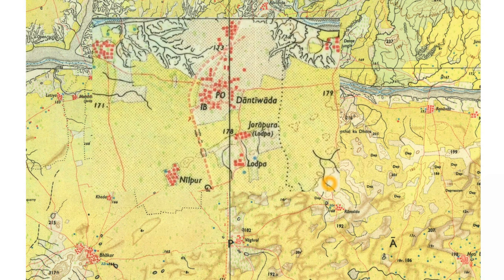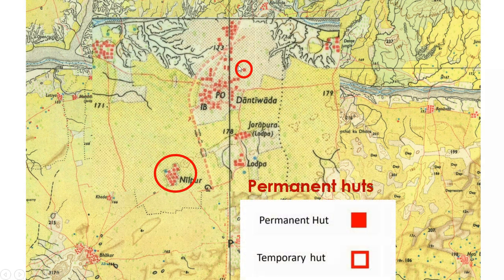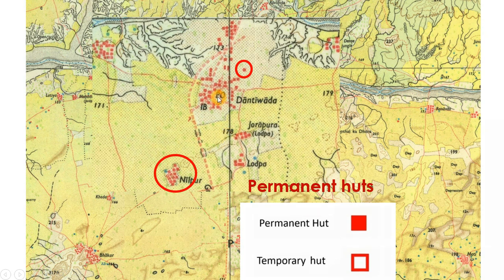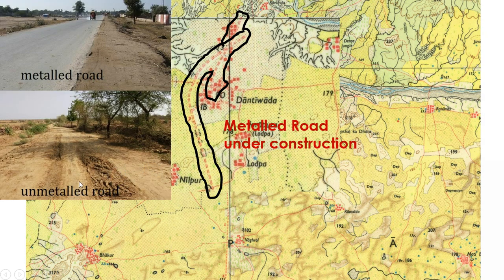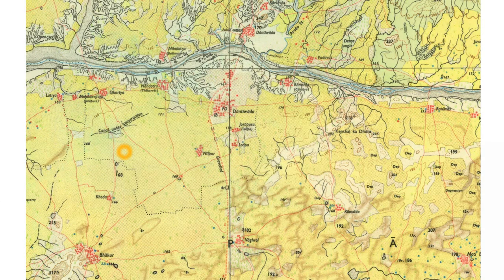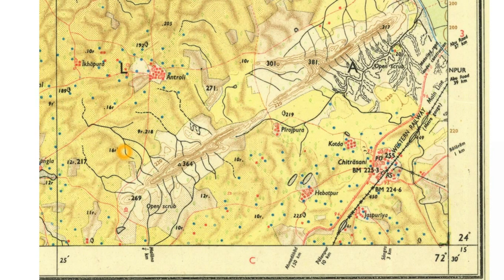Zooming into the Divada area, you can see a number of features shown in red. Red squares indicate permanent huts. Temporary huts are shown using a different symbol, though there are none in this particular area. You can also see a metal road under construction, shown as broken double lines. We have metal roads as well as unmetalled roads — which are wider than car tracks but not surfaced with metal — and all these are shown using red color.